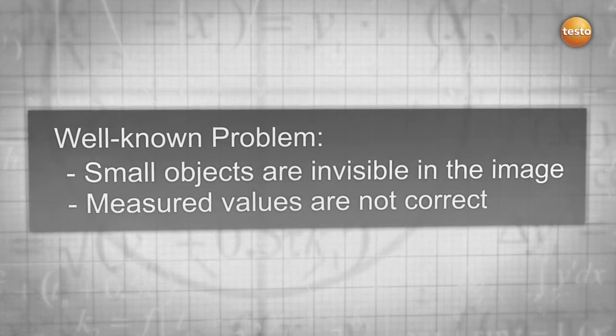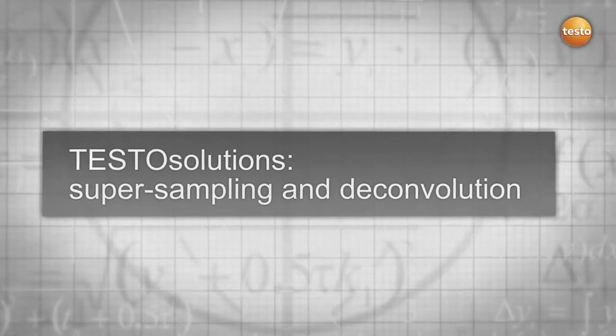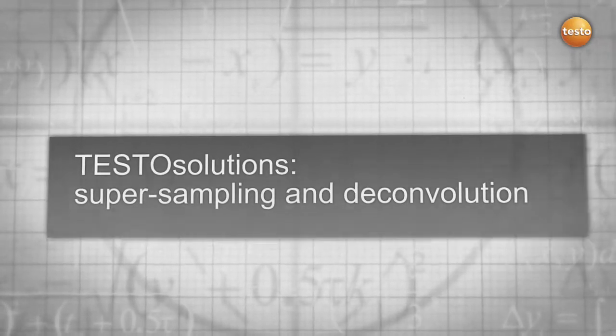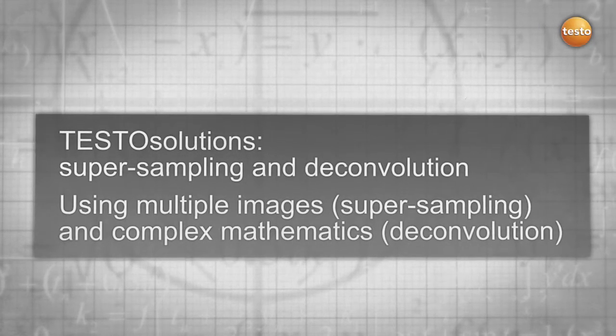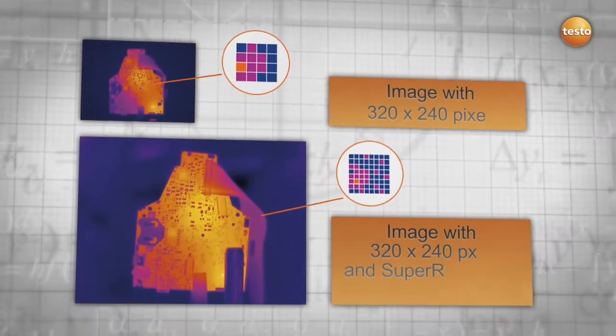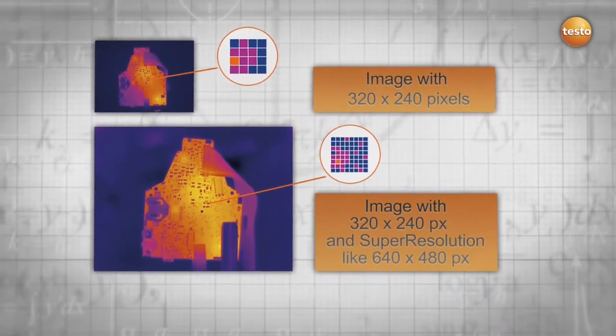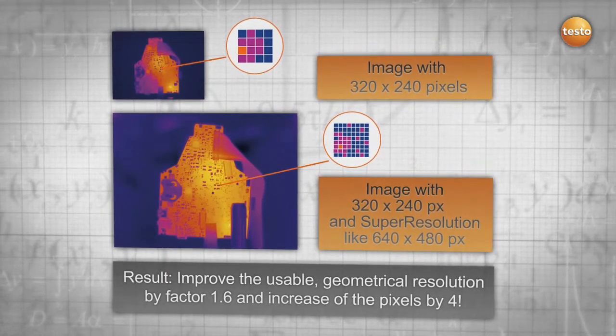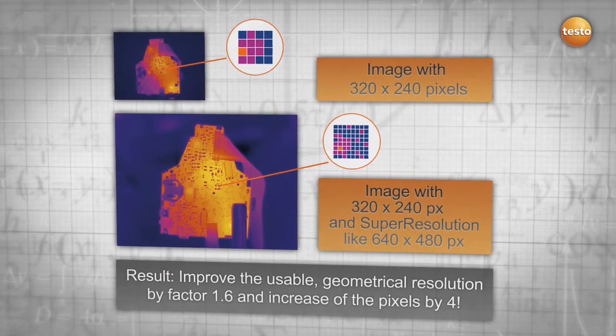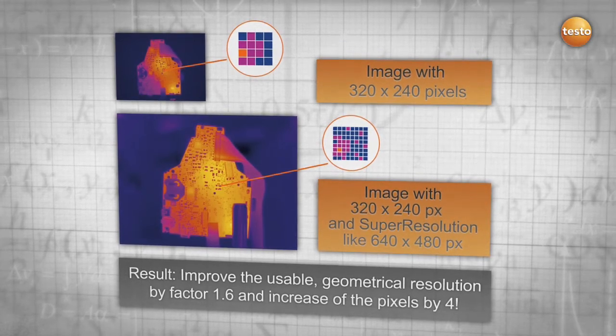The Testo solution combines super sampling and deconvolution. By using multiple images, super sampling, and complex mathematics deconvolution, you get more information out of your thermal images. Your result: an improvement of the geometrical resolution by 1.6 and an increase in your pixels by 4 for more details and safety.